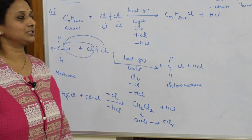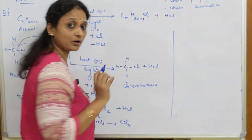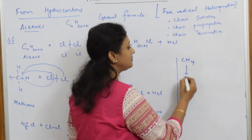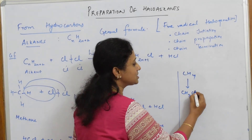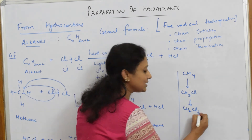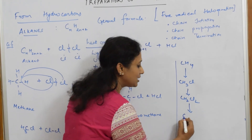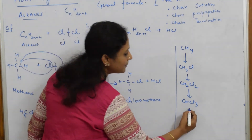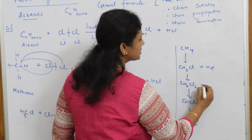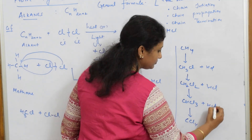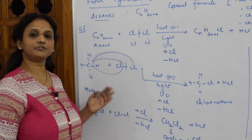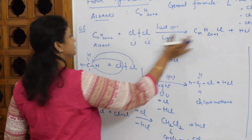To summarize the sequence: methane CH₄ → CH₃Cl → CH₂Cl₂ → CHCl₃ → CCl₄. Each step, one hydrogen is removed and one chlorine is added, with HCl coming out as a byproduct each time. This is the complete process for preparing haloalkanes from alkanes.